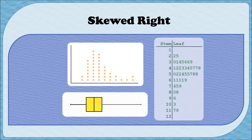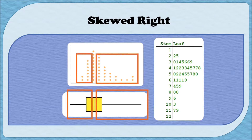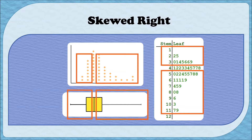Let's look at three other graphs that are skewed right. On the box plot, notice that the left hand side is more condensed than the right hand side — since the right hand side is more stretched out, this box plot is skewed right. Similarly, in the dot plot the tail on the left hand side is shorter than the tail on the right hand side, and in the stem and leaf plot the tail on the left or top is much shorter than the tail on the right or bottom. So all three of these graphs are also skewed right.